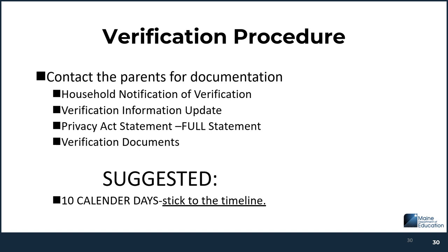Verification procedures: contact the parents from the selected applications. There is a sample household notification for verification on our website, along with verification information that tells them what they can send to validate their application. The Privacy Act statement — both federal and state — must be included on the notice sent to the selected family. When you get the information back, review and verify it and see if they're approved or denied. We suggest giving families 10 calendar days, and when you do, stick to that time frame.